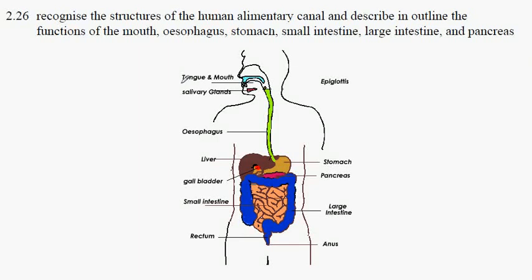GCSE Biology, syllabus statement 226. We're looking at the structure of the human alimentary canal, otherwise known as the digestive system, and we're going to be giving a brief summary of the functions of the parts.